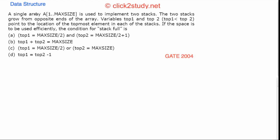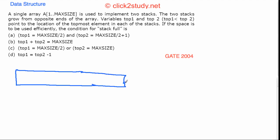We come to the next problem: a single array is used to implement two stacks. These two stacks grow from the opposite ends of the array. So suppose this is some array, and these two stacks grow from the opposite ends.